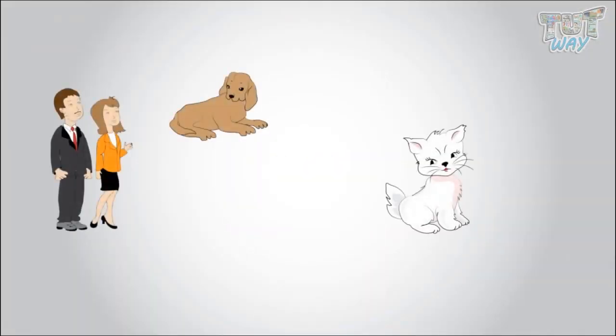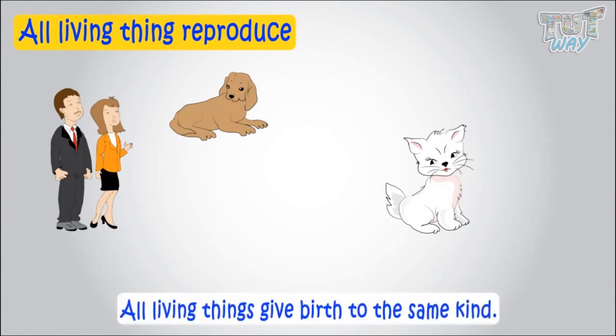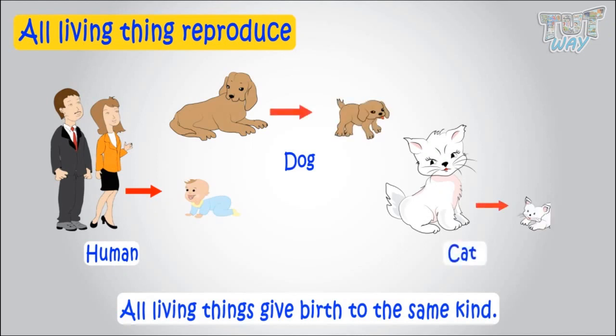We know all living beings reproduce. That is, all living things give birth to the same kind. Humans reproduce humans. Dogs reproduce dogs. Cats reproduce cats and so on.